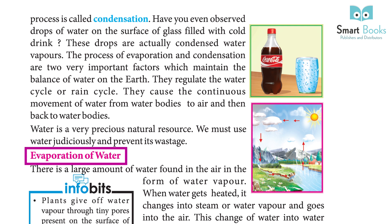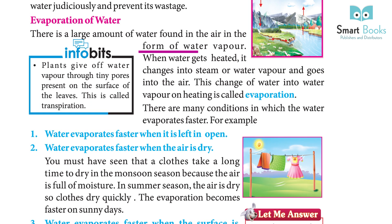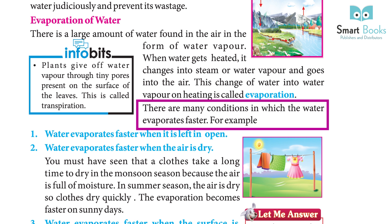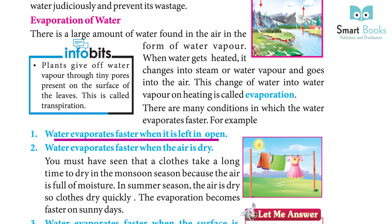Evaporation of water: There is a large amount of water found in the air in the form of water vapor. When water gets heated, it changes into steam or water vapor and goes into the air. This change of water into water vapor on heating is called evaporation. Water evaporates faster when it is left in the open, and water evaporates faster when the air is dry.